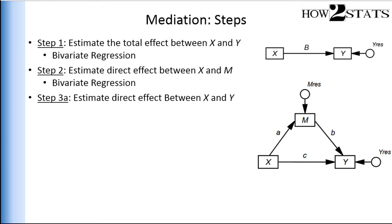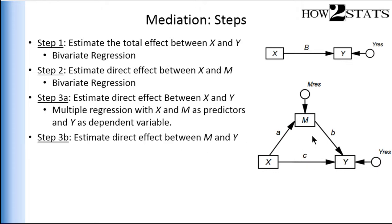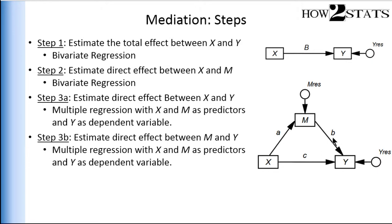Step 3a — and I call it 3a because there's also a 3b, conducted at the same time — you need to estimate the direct effect between x and y, the effect of the independent variable on the dependent variable. You estimate this in a multiple regression including both the independent variable and the mediator as predictors of the dependent variable to get the unstandardized or standardized beta weight. Step 3b: estimate the direct effect between m and y — coefficient b — also estimated in that same multiple regression with x and m as predictors of y.